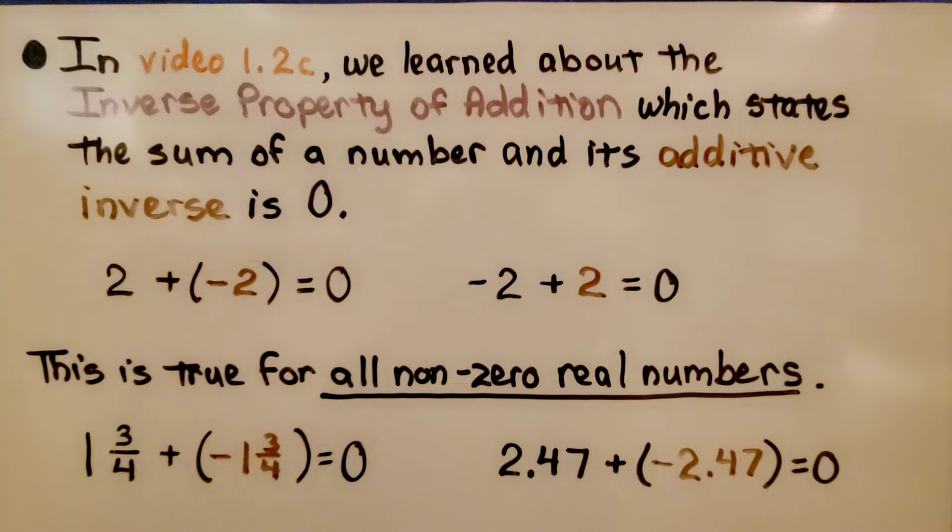This is true for all non-zero real numbers. If we have positive one and three fourths and we add it to negative one and three fourths, it equals zero. If we have positive 2.47 and add it to negative 2.47, it will equal zero.